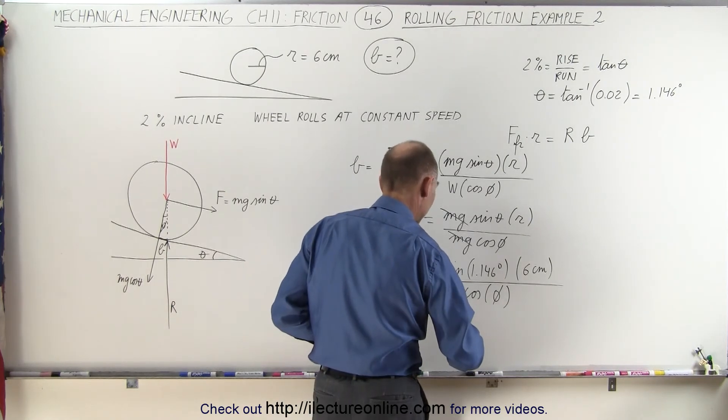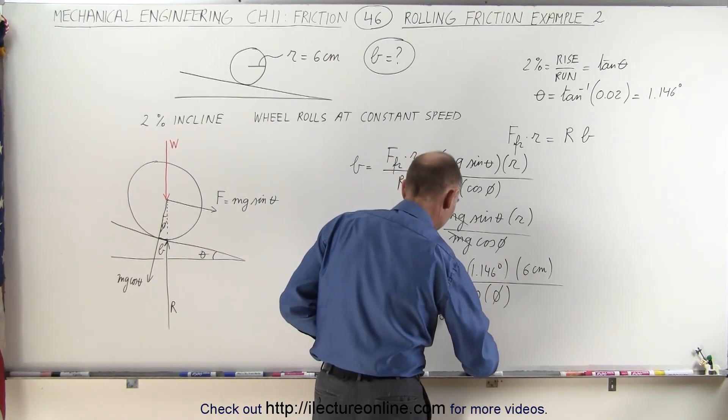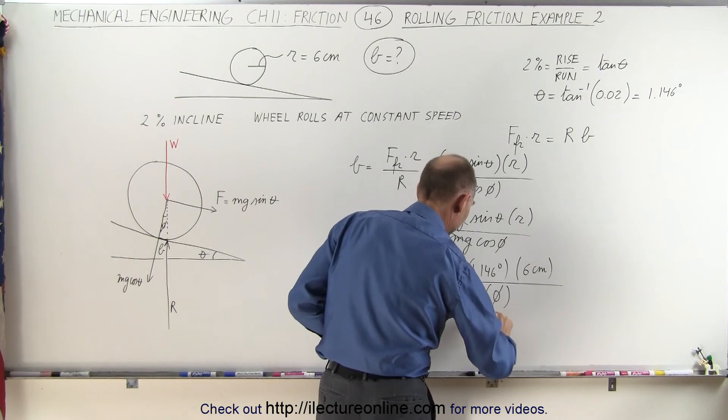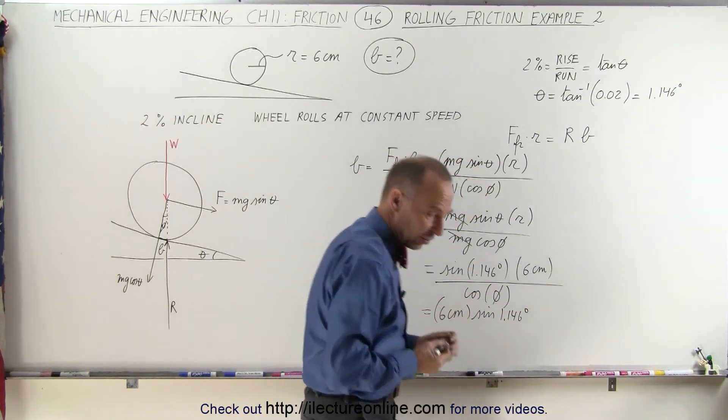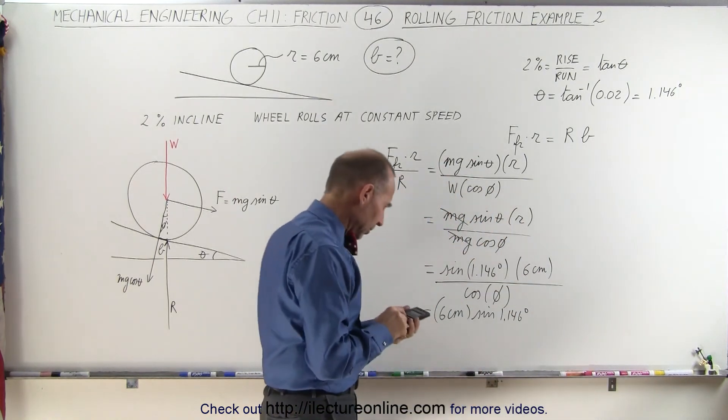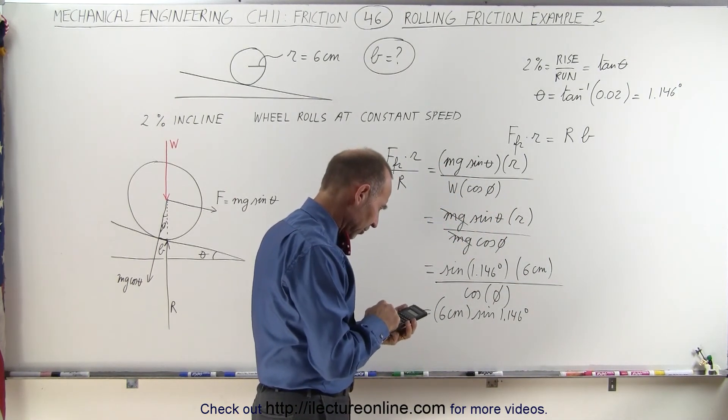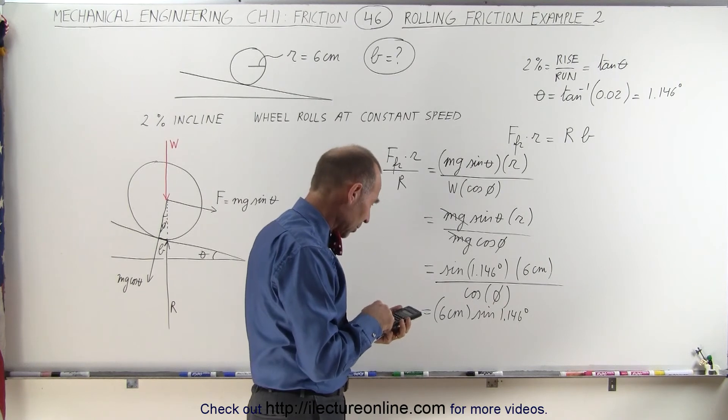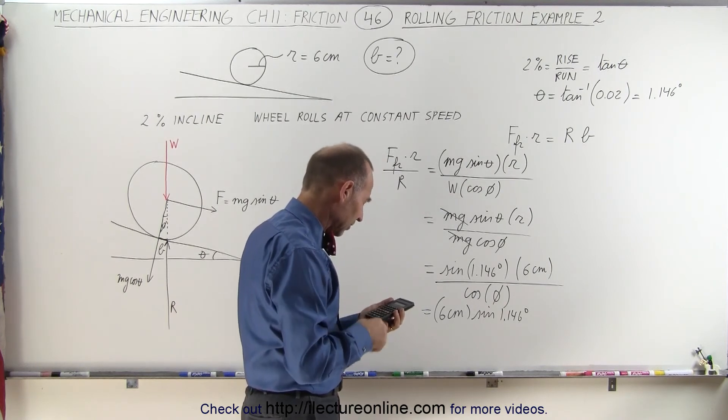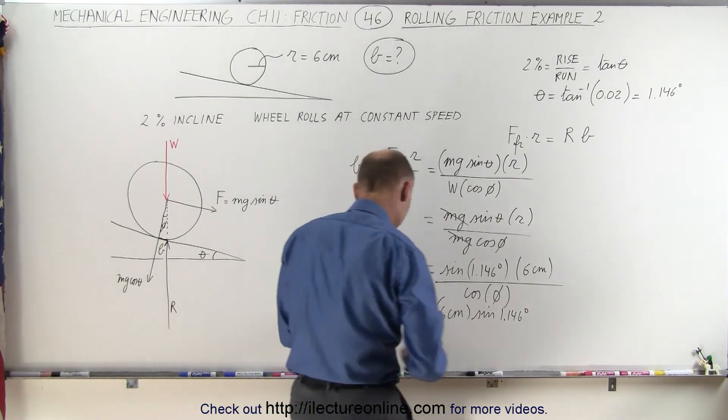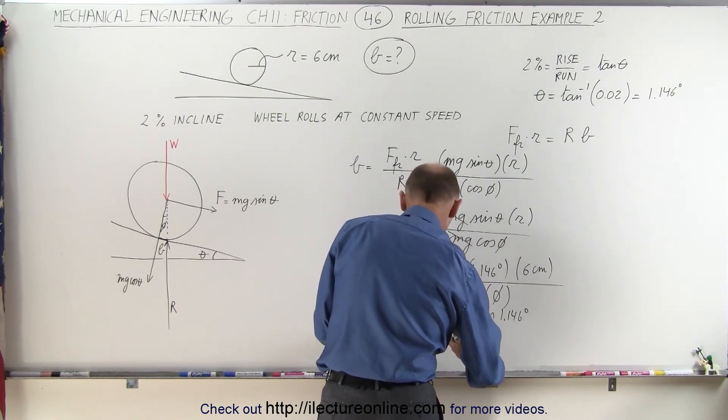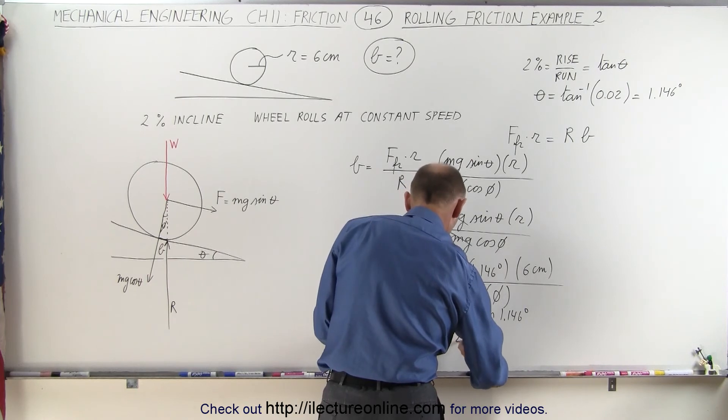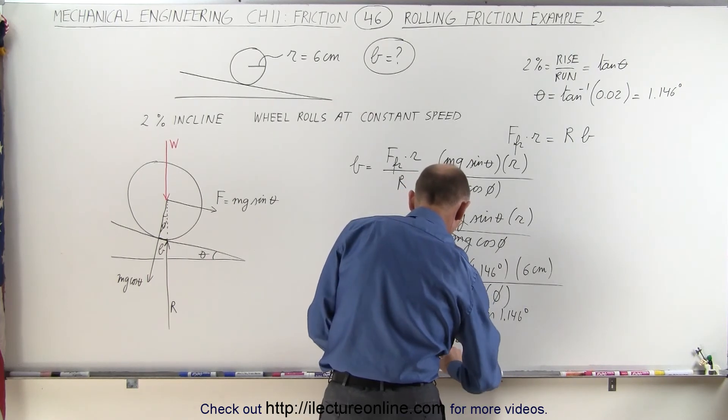And so in the end, we can say that this is equal to 6 centimeters times the sine of 1.146 degrees, and simply divided by 1. So now we plug in that number, 1.146, take the sine of that, and we multiply that times 6 centimeters. We end up with 0.12 centimeters, or 1.2 millimeters.